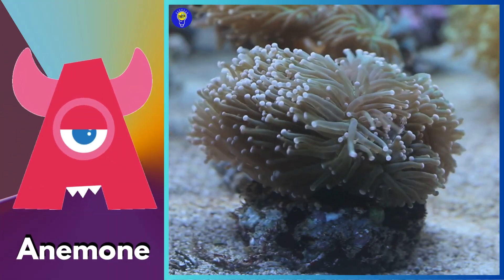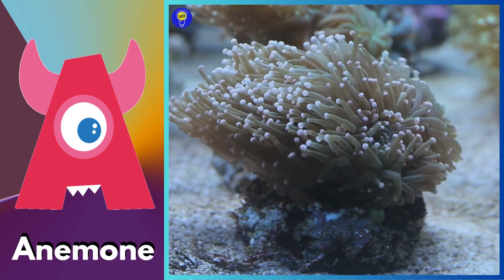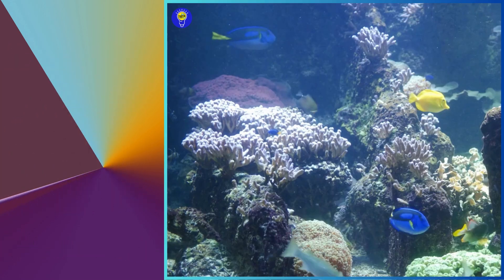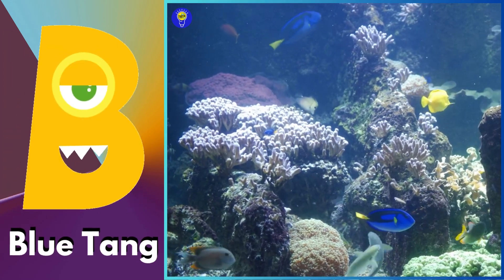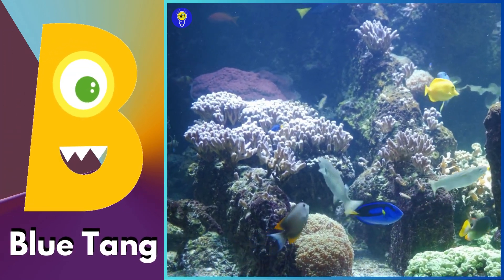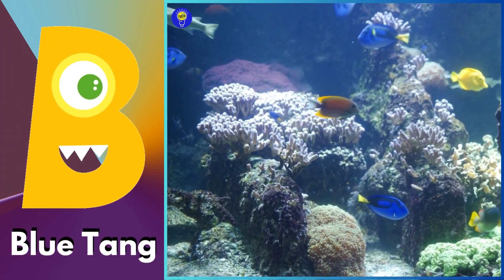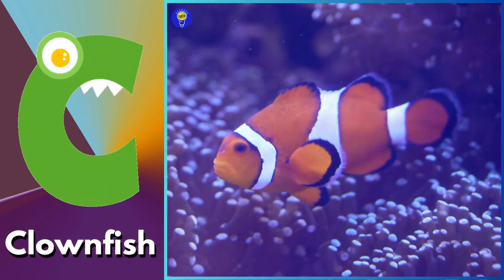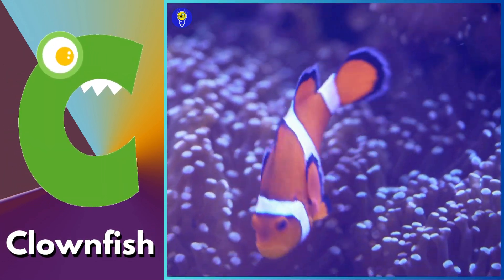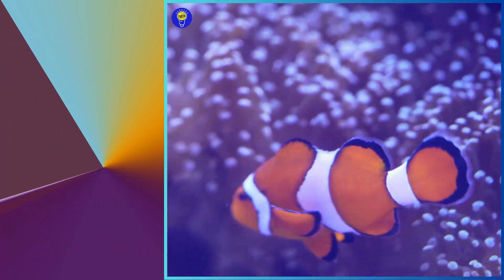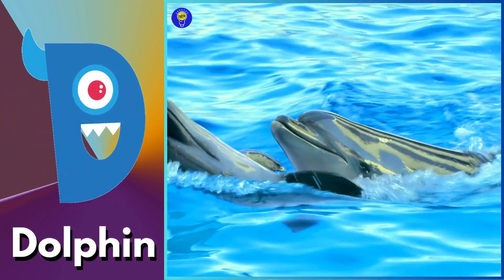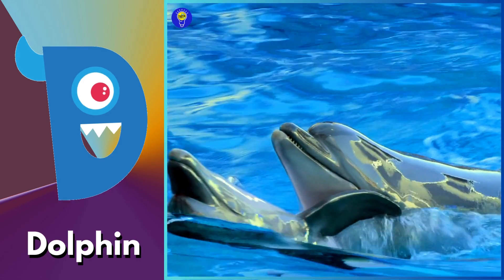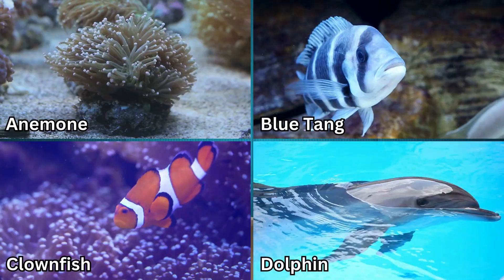A is for anemone, ah, ah, anemone. B is for blue tang, buh, buh, blue tang. C is for blowfish, kuh, kuh, blowfish. D is for dolphin, duh, duh, dolphin.